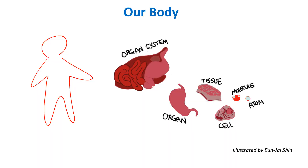Our body is made of many organ systems, such as the digestive system. The digestive system is made of many different organs, including the stomach. The stomach is made of different types of tissues, and each type of tissue is made of different types of cells.